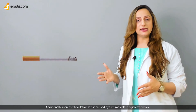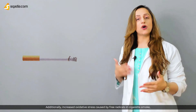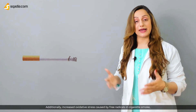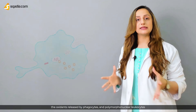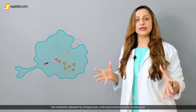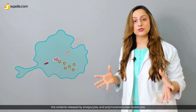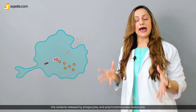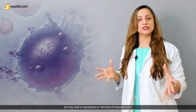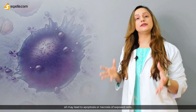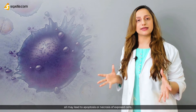Additionally, increased oxidative stress caused by free radicals in cigarette smoke, the oxidants released by phagocytes and polymorphonuclear leukocytes, may all lead to apoptosis or necrosis of the exposed cells.